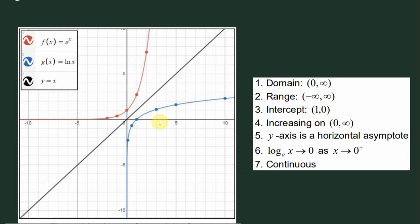If you look at this graph right here, we have f(x) equal to e raised to x and g(x) equal to ln of x and the line y equal to x. As you can see, ln of x is the inverse of e raised to x and they are symmetric along the line y equal to x.